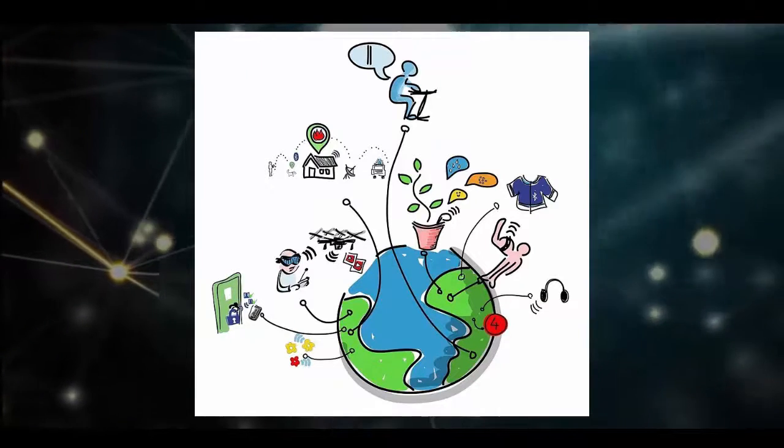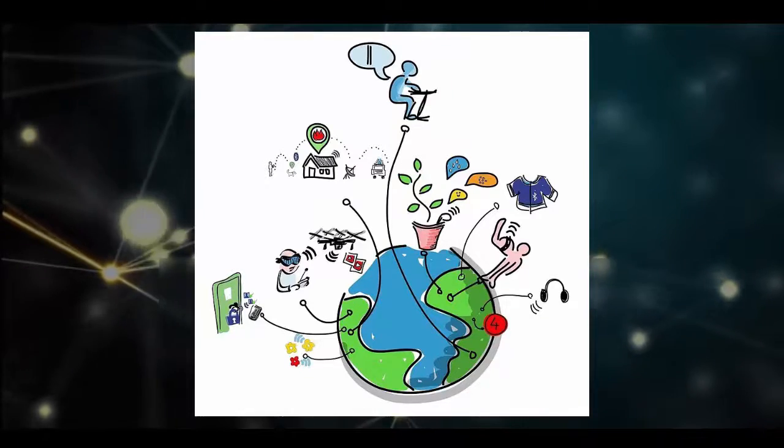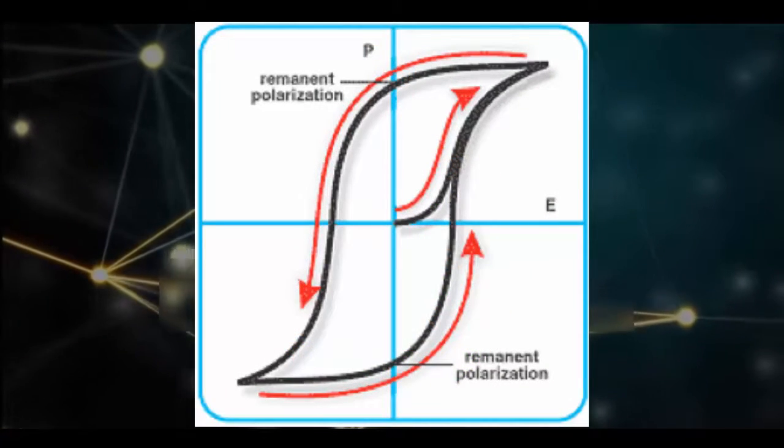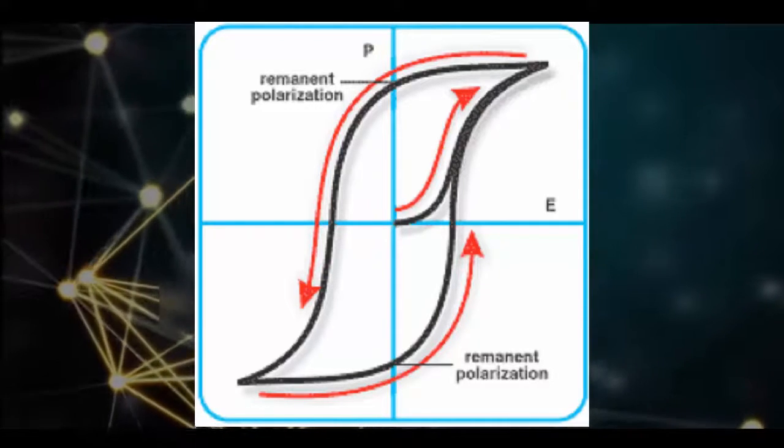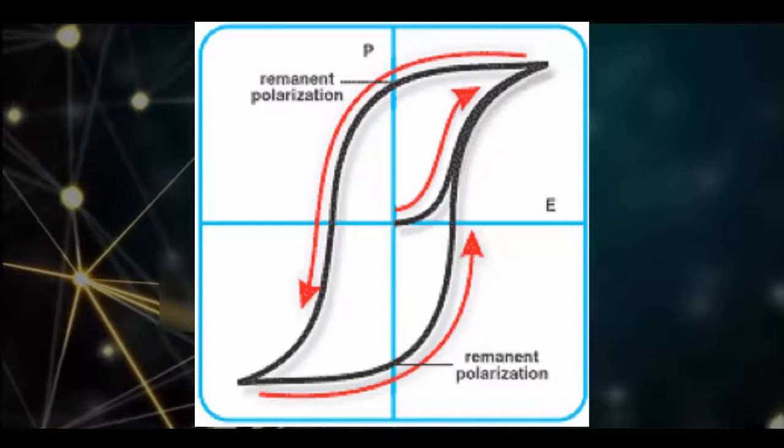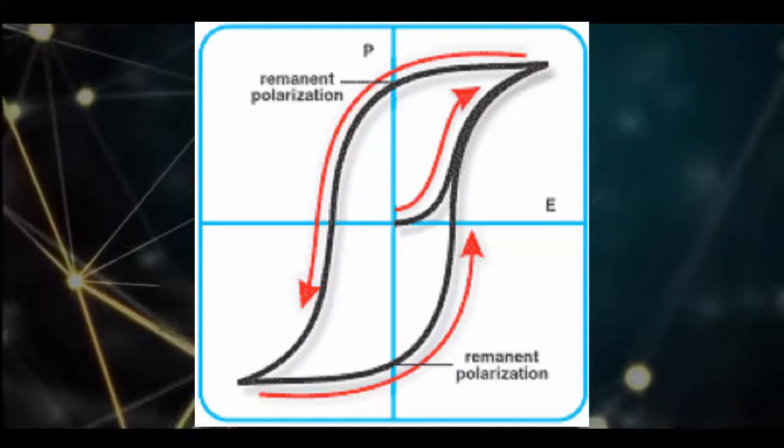Like all perovskites, KBNNO is a ferroelectric material, which means it's filled with tiny electric dipoles that are kind of like tiny compass needles. When a compass is exposed to a magnet, the needles move in a certain direction.